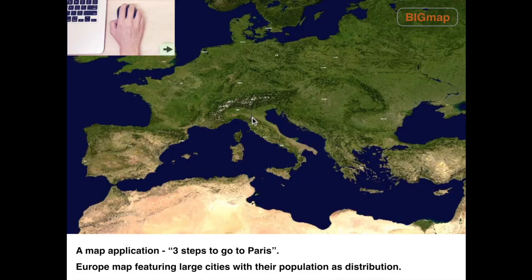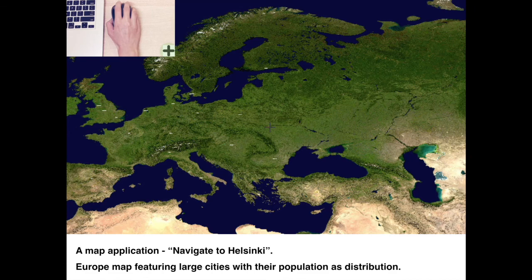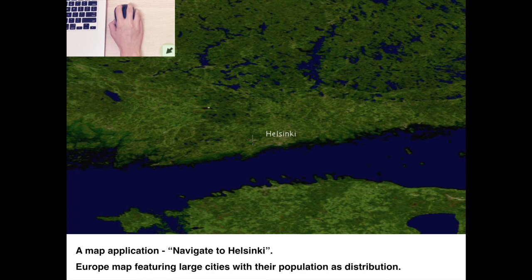We also applied Big Nav to a more realistic setting: a map navigation application where the probability of a city is proportional to its population. Users could navigate to Paris, one of the most highly populated cities in Europe, in just three steps, but could also easily navigate to smaller cities such as Helsinki. We could easily use other sources of data, such as popularity, to create the probability distribution.